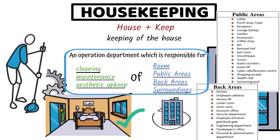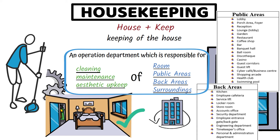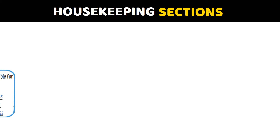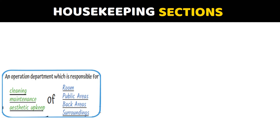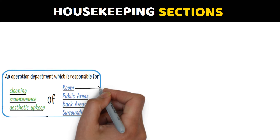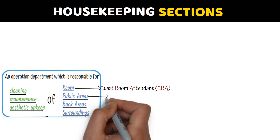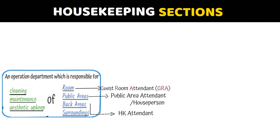Housekeeping is an operational department which is responsible for cleaning, maintenance, and aesthetic upkeep of rooms, public areas, back areas, and surroundings. The persons who clean guest rooms are called guest room attendants, and those who clean public areas are called public area attendants. Back areas and surroundings are normally maintained by the collaborative efforts of all housekeeping attendants. Surrounding area cleaning may be outsourced if the area is too large.